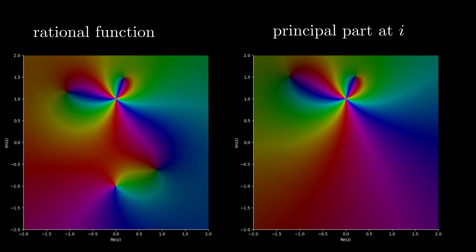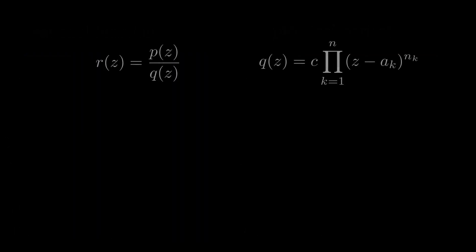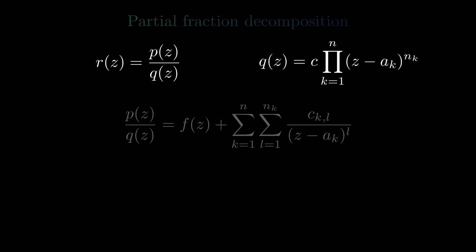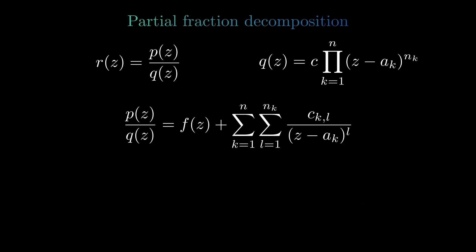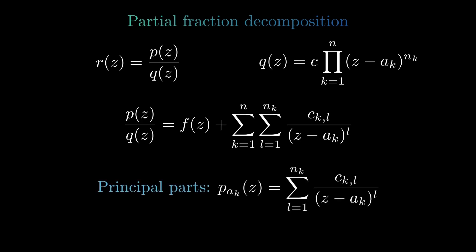When changing the principal part, we also change our original function. So what we have done here is to take a rational function, rewrite the denominator as a product, find a partial fraction decomposition, and get at each pole some principal part, which is a polynomial in 1 divided by z minus a. At each pole, the rational function has the value infinity, so it defines a function from the complex plane to the extended complex plane.